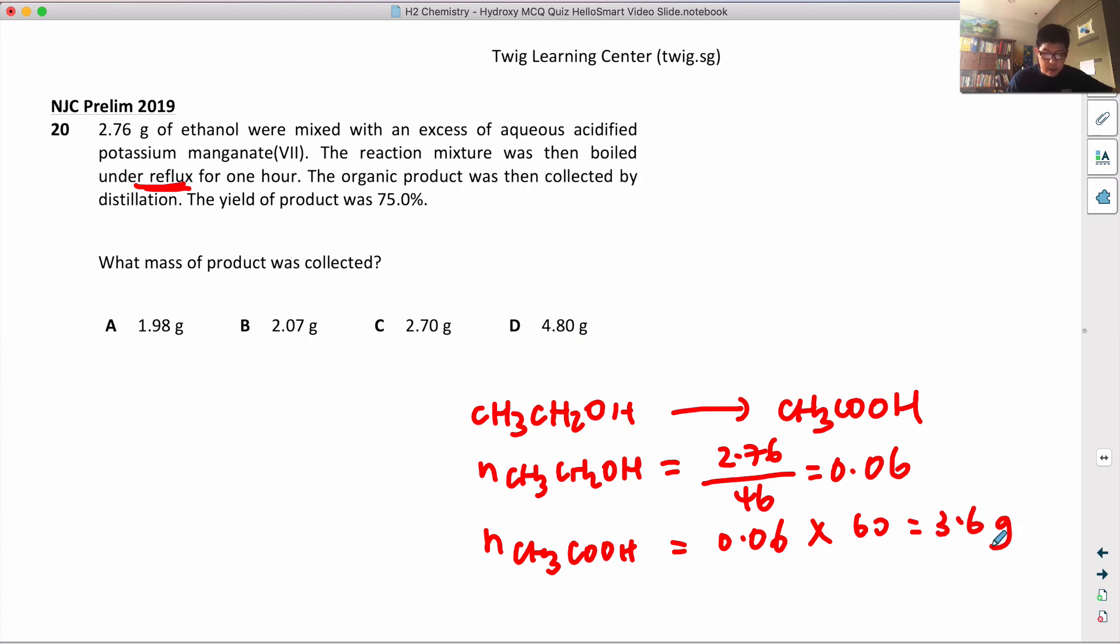Since they say 75% yield, 75% yield implies 3.6 times 0.75. That gives you a value of 2.7 grams. So that's why the answer is C.